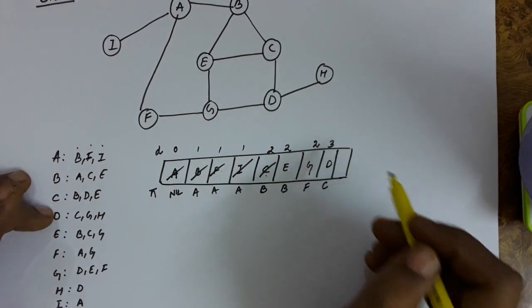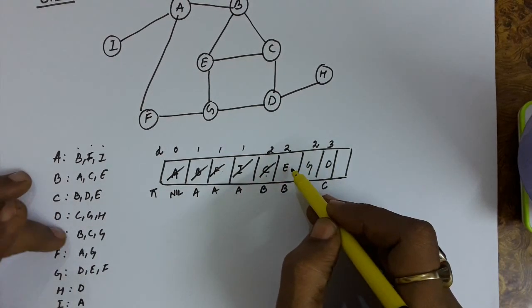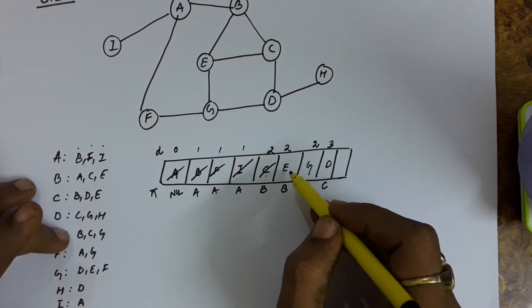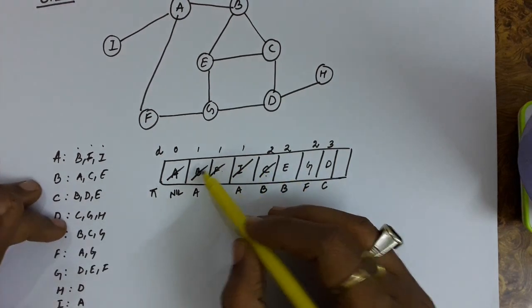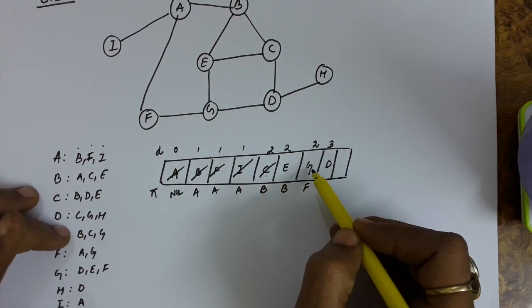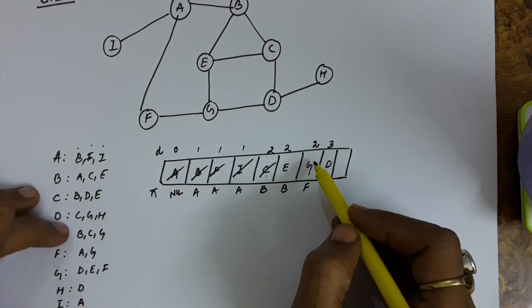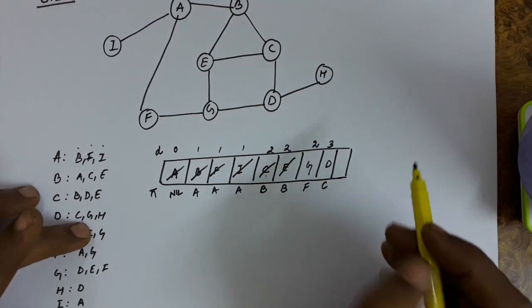Now delete this C. See the connections from E. These are B, C and G. B, C, G all are there in the queue. So no connection will be added from here. So E will be deleted.